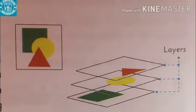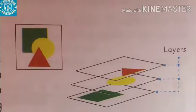Layers help you organize the objects, animations, and other elements in an Animate document. Layers can be imagined as multiple transparent pages stacked on top of one another. Each layer can contain a different image that appears on the stage. You can draw and edit objects in one layer without affecting the objects in another layer.